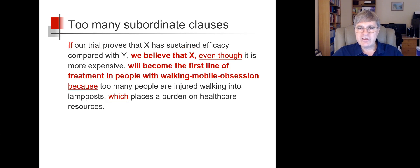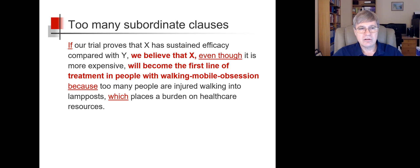Here, the main sentence is: we believe that X will become the first line of treatment in people with walking mobile obsession. But we also have four subordinate clauses introduced by subordinate conjunctions: if, even though, because, and which.